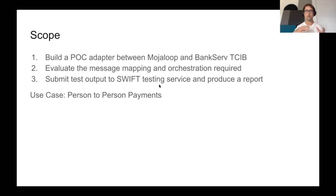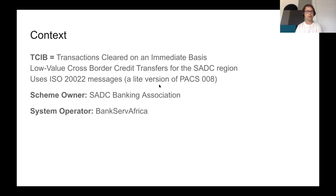Swift runs a testing service where we can generate the ISO 20022 messages, submit those, produce reports, and so on, and we plan to do that as well. The use case we focused on is person-to-person payments, so very tightly scoped. The context here is that TCIB stands for Transactions Cleared on an Immediate Basis — it's a low-value cross-border credit transfer system specifically for the SADC region. The SADC Banking Association are the initiators and owners of the scheme.